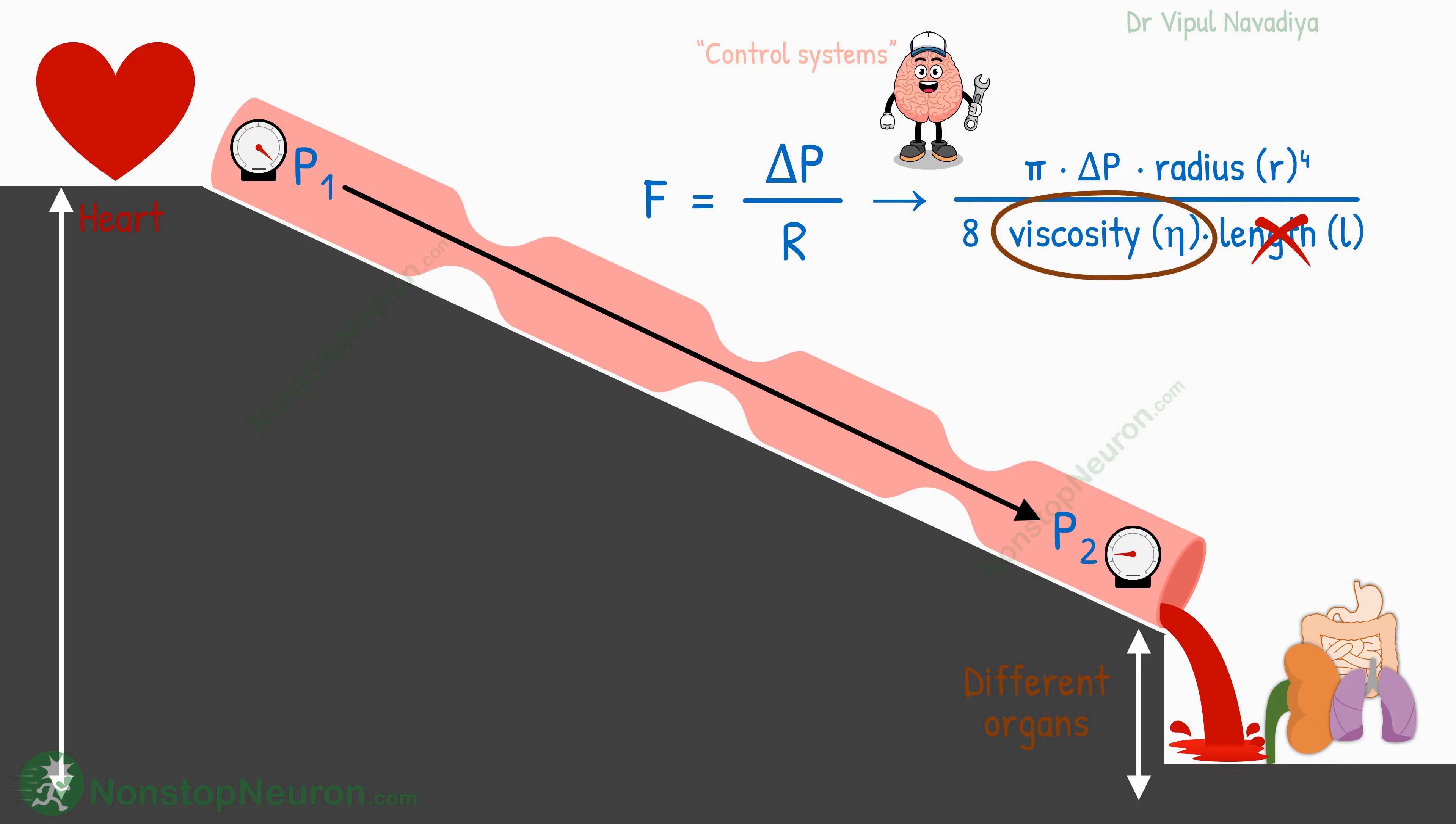The viscosity in turn depends on hematocrit. Now red blood cells' main job is totally different, and playing with them affects those functions as well. So our body's control system is smart enough to not use viscosity either. Now we have two factors remaining, blood pressure and the radius of blood vessels. These two are used to control flow.